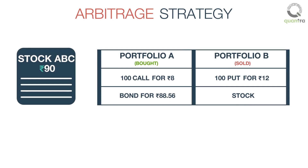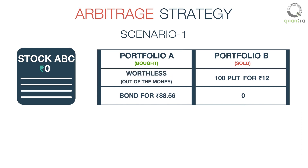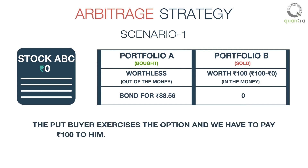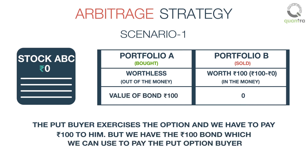Now we will discuss how different scenarios at the time of options expiry will affect this strategy. In scenario 1, suppose the stock price drops to 0 at expiration. The call option that we had bought in portfolio A expires worthless, and the put option which we had sold in portfolio B is now worth Rs.100. The put buyer exercises the option and we have to pay Rs.100 to him. But we have the Rs.100 bond, which we can use to pay the put option buyer. Thus our net profit remains the same at Rs.5.44.